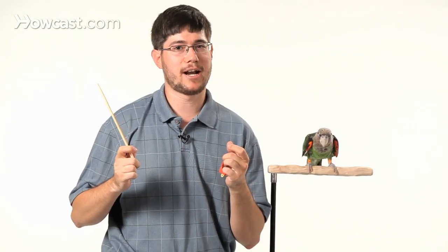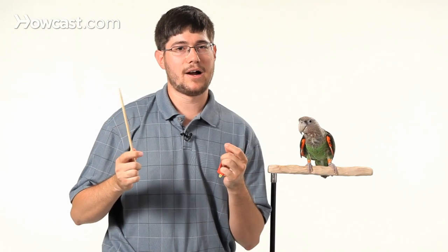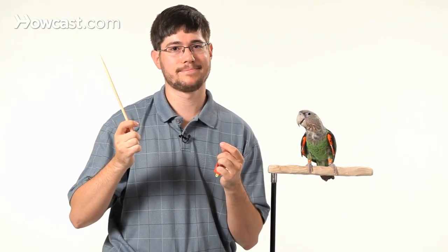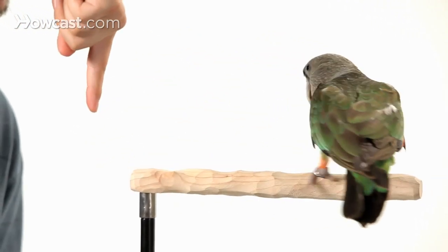Turn around is one of the easiest tricks you can teach a parrot, whether it's a budgie or a macaw. Any parrot can learn to follow a target stick in a circular motion and pick up the trick. And that's how you teach your parrot to turn around.